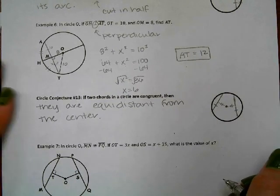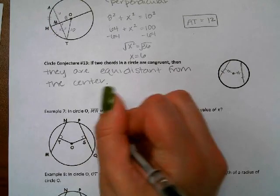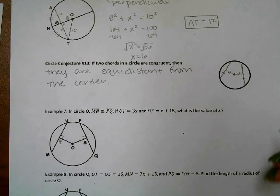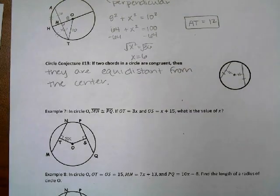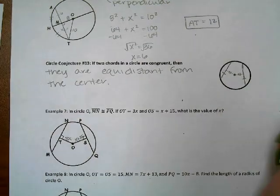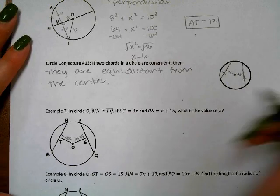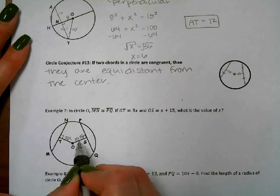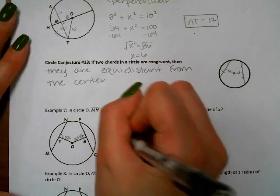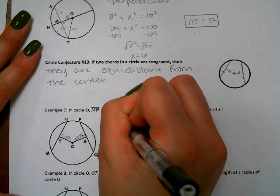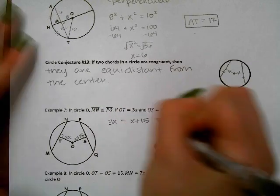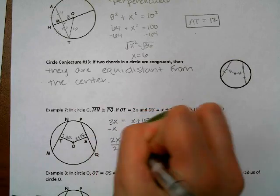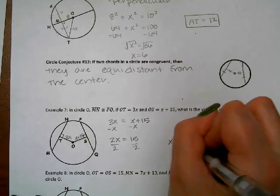Example seven: in circle O, MN is congruent to PQ, so these two chords are equivalent in length. OT is 3X and OS is X + 15. Since the chords are congruent, the distances from the center are equal, so 3X = X + 15. Subtracting X: 2X = 15, divide by 2, X = 7.5 (or 15/2). Either form is fine.